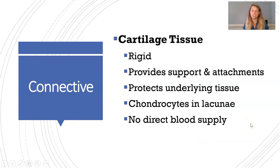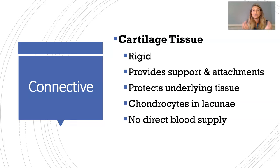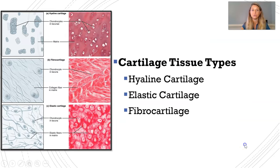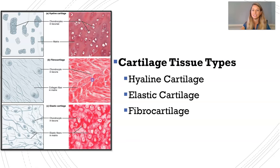Cartilage tissue is a rigid type of connective tissue — almost as rigid as bone but not quite. It provides support, attachments, and protects underlying tissues. The cells of cartilage are chondrocytes — remember, 'chondro' means cartilage. Chondrocytes are protected in small structures called lacunae, which are like little pockets they stay in. Cartilage does not have a direct blood supply and depends on surrounding tissues. The three types are hyaline cartilage, elastic cartilage, and fibrocartilage, each found in different parts of the body.